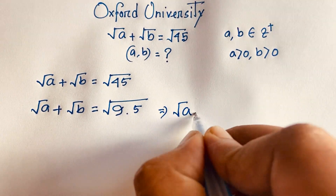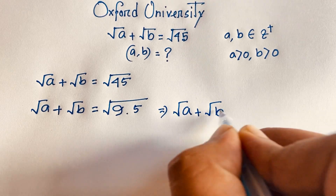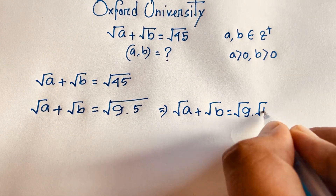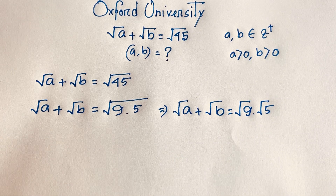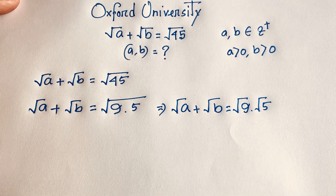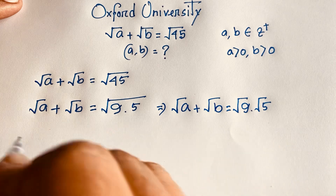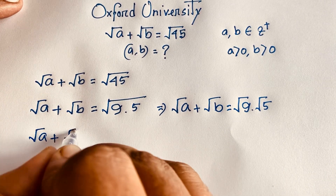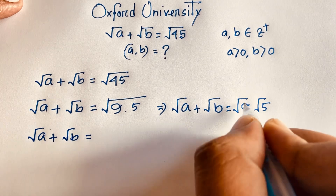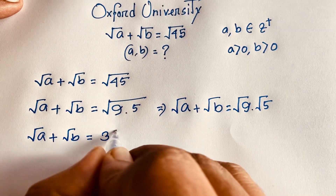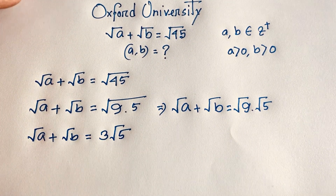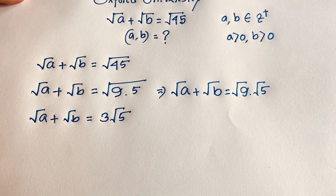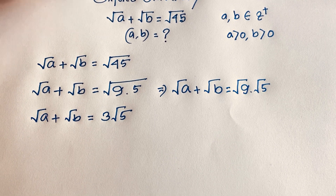Square root A plus square root B is also equal to square root 9 times square root 5. I solve this question step by step. Square root 9 equals 3, so we get: square root A plus square root B is equal to 3 square root 5.